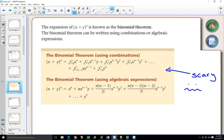But let's think about what this says. If I do (x+y)^n, and right underneath here we'll do (x+y)^4.